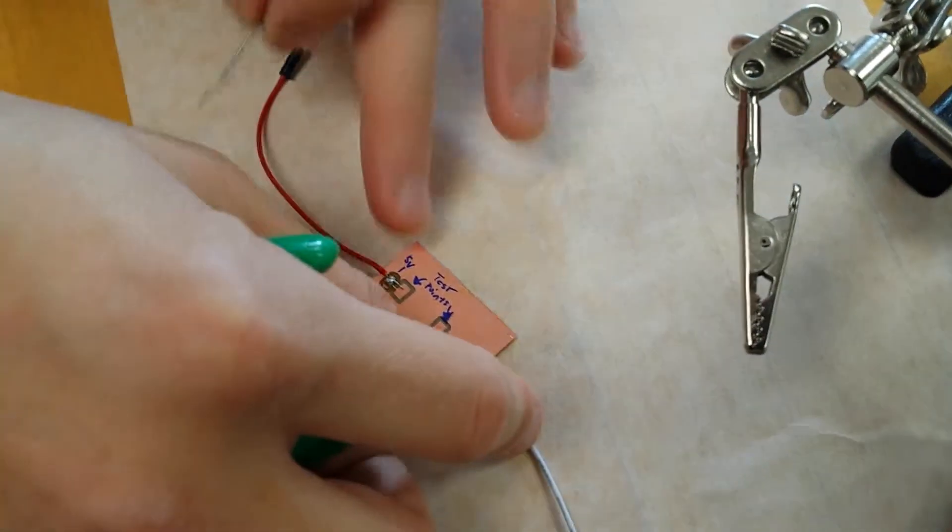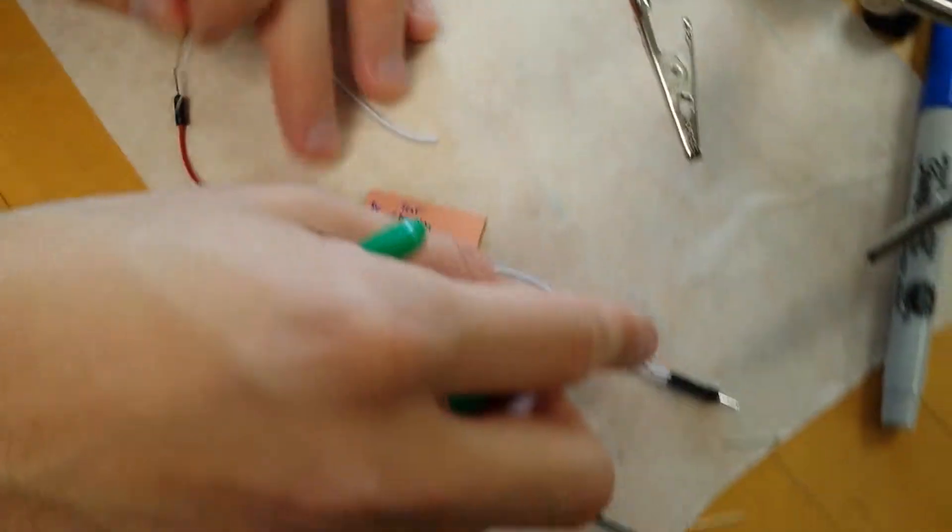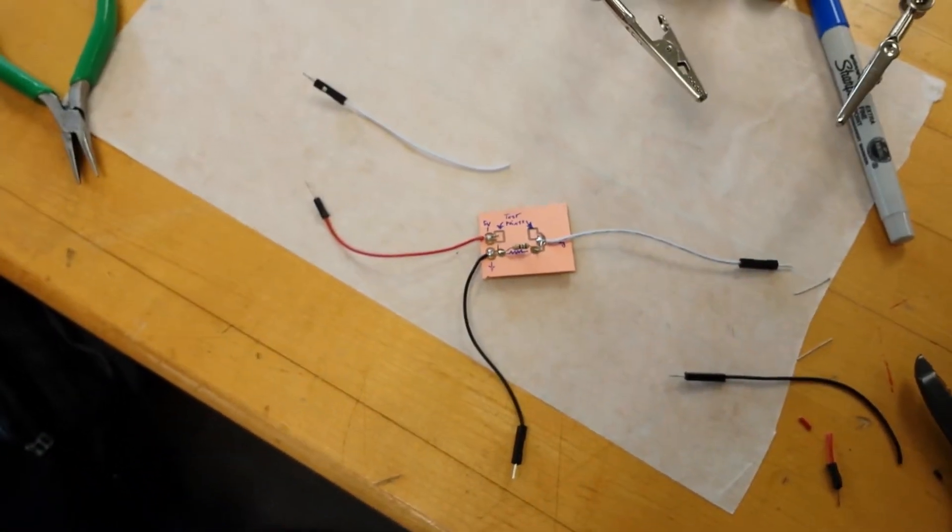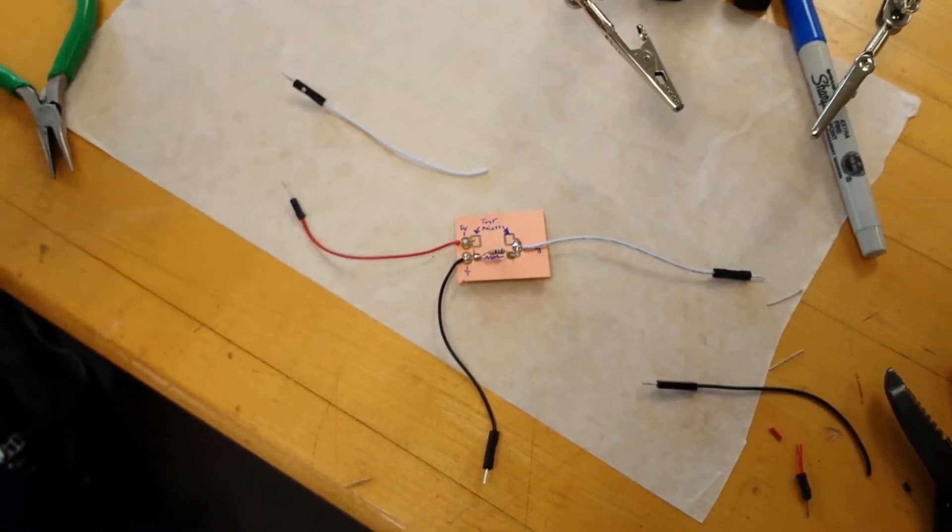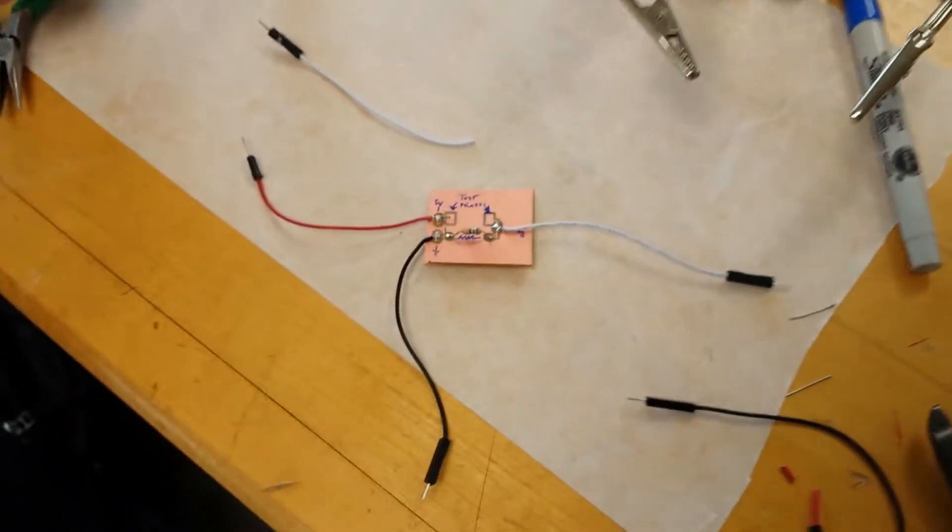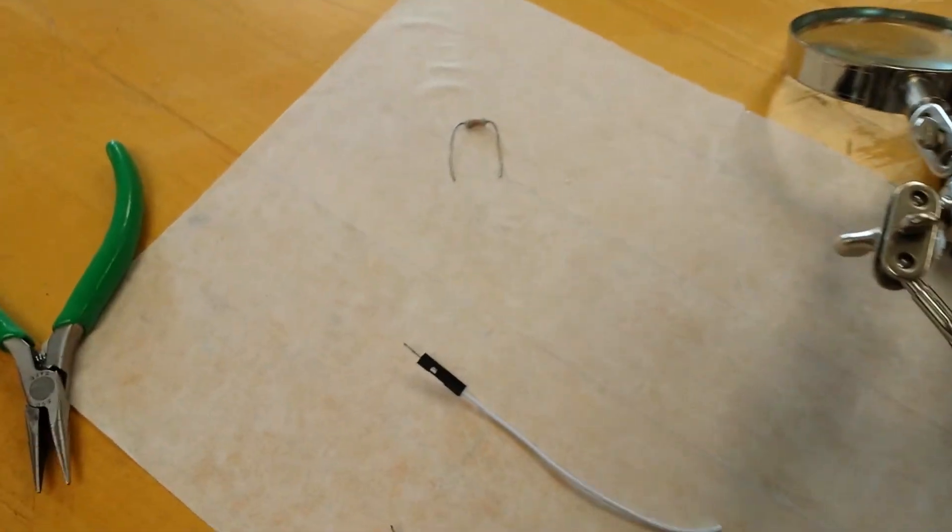And what should happen is you should read a voltage off of this analog pin. Your code should convert that into the, it should do a formula to convert that voltage into the resistance value of the unknown resistor. And that's it.